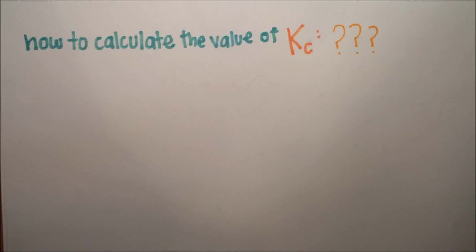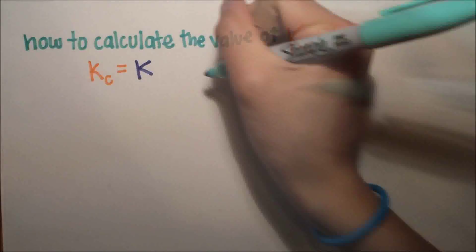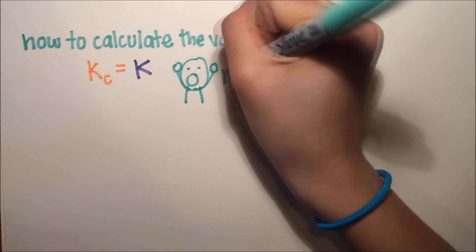Well, Kc is just a fancy way of saying K, the equilibrium constant. And this just is one of those things teachers do to confuse students.